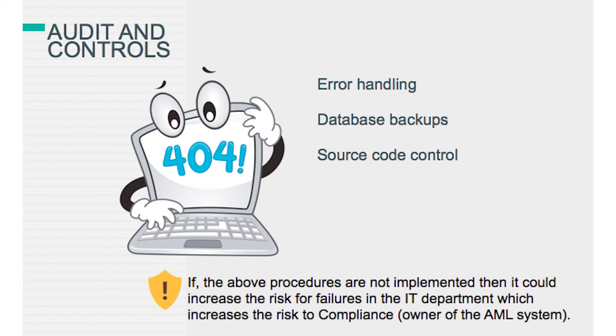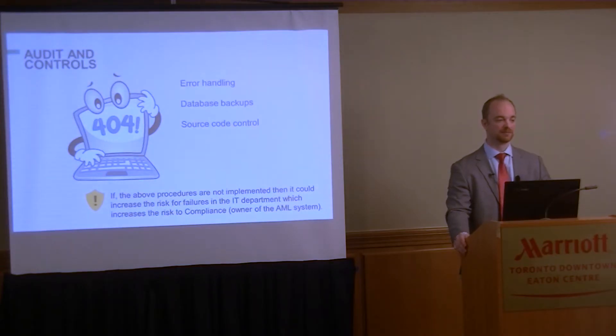Audits and controls cover how errors are handled, database backups, and source code control. For example, if you're monitoring 15 files for your AML system — ACH, international wires, cash — and by 9 p.m. every day all files should be present, but one day a wires file doesn't come in, is there a control that detects and flags that? Or do you run the system and miss it entirely? That's a key example of audits and controls.